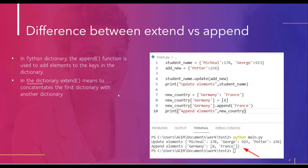Now we will discuss the difference between extend and append. In a Python dictionary, the append function is used to add elements to the keys and values in the dictionary. In the case of extend, we concatenate the first dictionary with another dictionary using the update function.